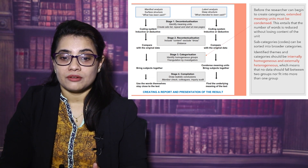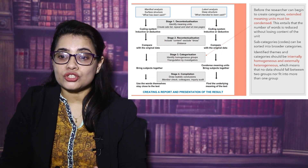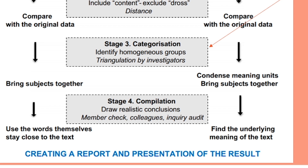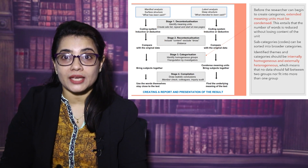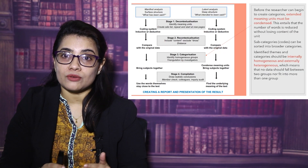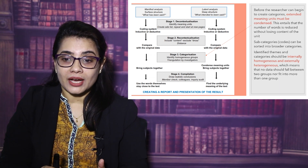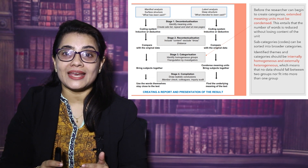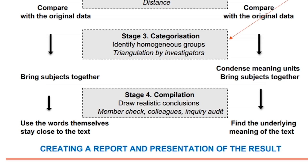In the third step, categorization, the researcher begins to create categories. Extended meaning units must be condensed — the number of words is reduced without losing the content of the unit. The identified themes and categories should be internally homogeneous and externally heterogeneous. This is very important: no data should fall between two groups or fit into more than one group. You need to categorize the meaning units with the exact coding they belong to.